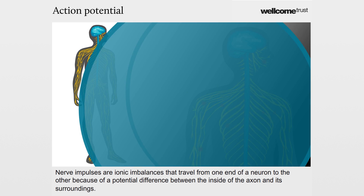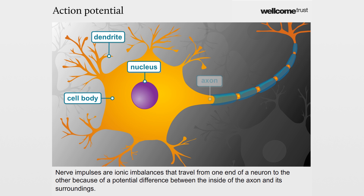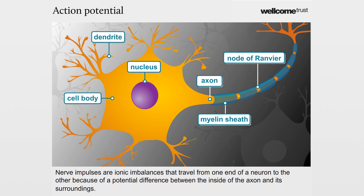Nerve impulses are ionic imbalances that travel from one end of a neuron to the other because of a potential difference between the inside of the axon and its surroundings.